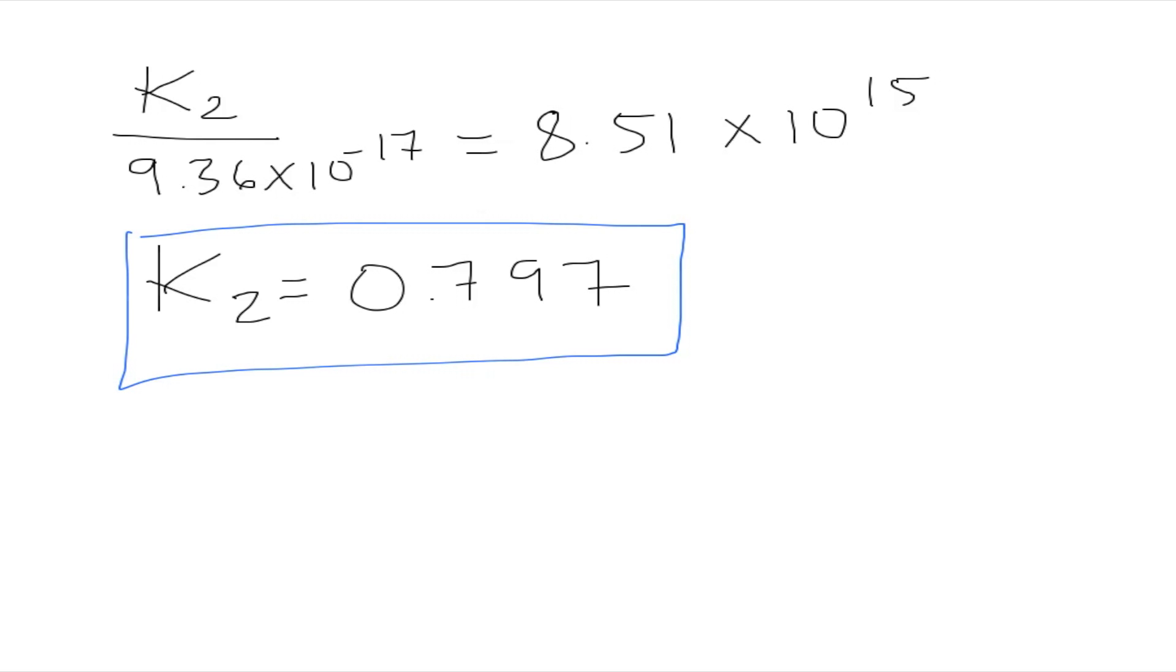Using the Van't Hoff equation, we calculated how K changed when the temperature went from 25 degrees Celsius to 700 degrees Celsius. Before we had a K value of 9.36 times 10 to the negative 17, and now we got a K of 0.797.